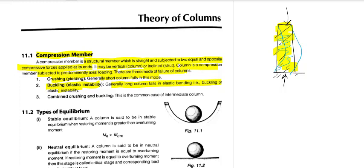Then comes the combined mode — that is a combination of crushing and buckling. This occurs basically in intermediate columns. So there are three types of columns: short column, long column, and intermediate column — with three corresponding failure types: crushing, buckling, and combined crushing and buckling.